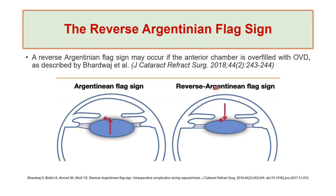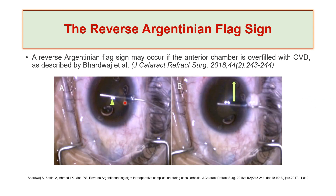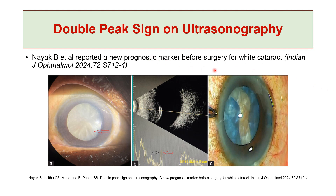The main takeaway is that you should not overfill the anterior chamber with OVD to avoid the reverse Argentinian flag sign, because high pressure inside the anterior chamber could also extend the fragile anterior capsule pararadially. In the first example, the vector force came from the high intralenticular pressure; here, the vector forces from overfilling of OVD lead to radial extension of the capsule.